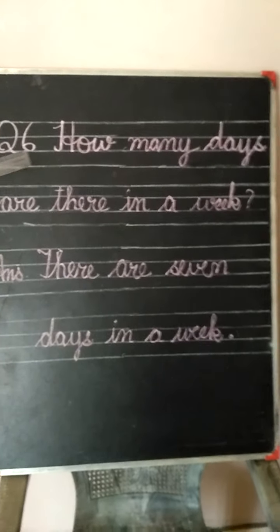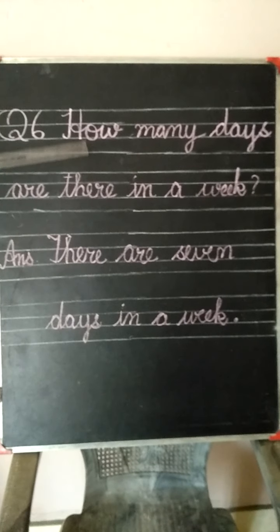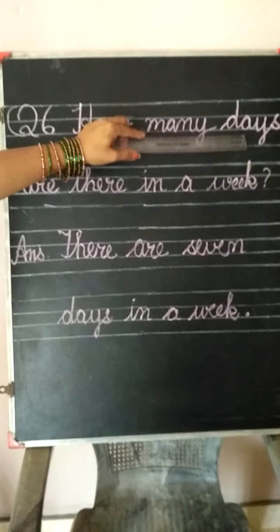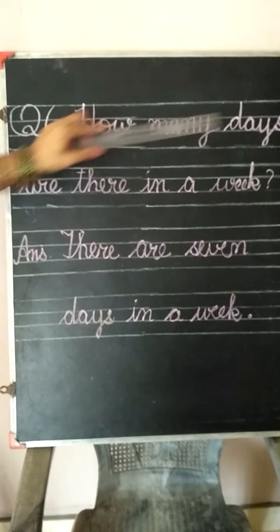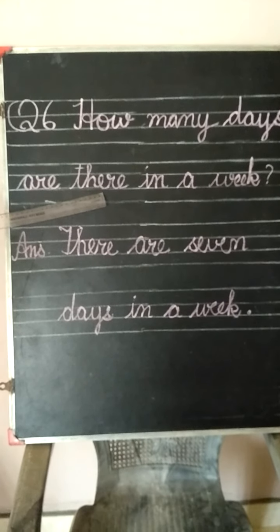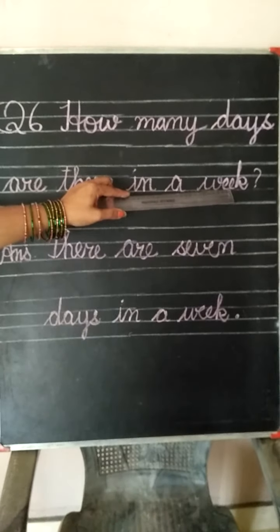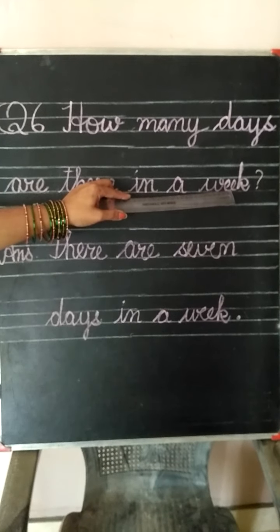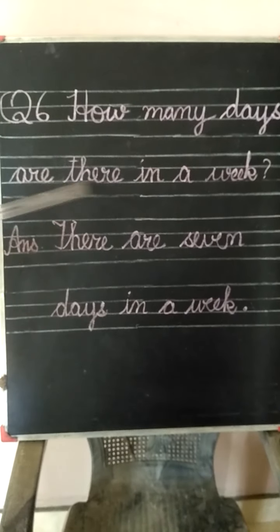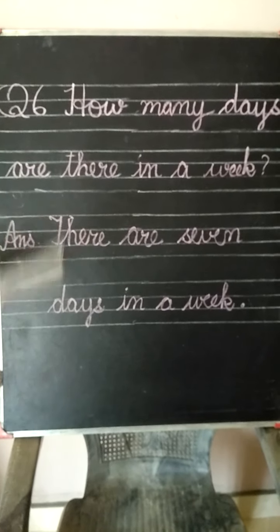We have a question also. H-O-W — How. M-A-N-Y — Many. D-A-Y-S — Days. How many days? A-R-E — Are. T-H-E-R-E — There. Are there? In a W-E-E-K — week. How many days are there in a week? Means: ek week mein kitne din hoti hain.